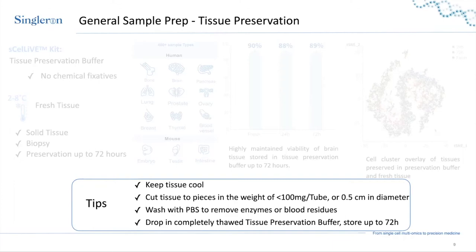If you have tissue from the vasculature with a lot of blood that cannot be fully removed, that is still fine, but we recommend removing as much as possible. For tissue from the digestive tract, wash as much as possible to remove all enzymes, otherwise they will affect later digestion or isolation of single cells.